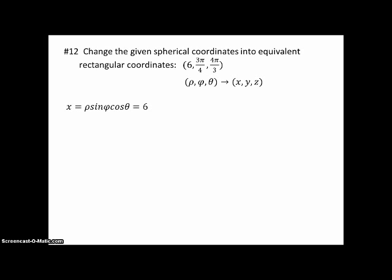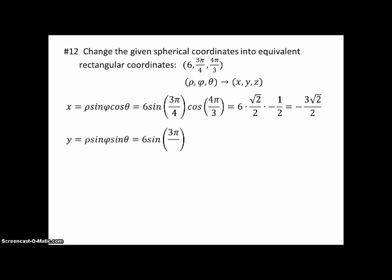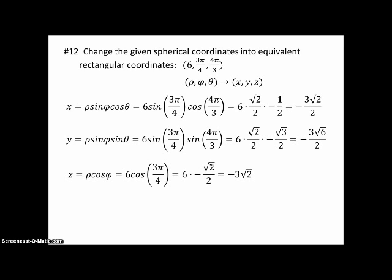Number 12. Change the given spherical coordinates into equivalent rectangular coordinates. 6, 3 pi over 4 and 4 pi over 3. So what we've been given is rho phi theta. We want to change to x y and z. So we take out the formulas for spherical coordinates and plug into the formula for x. So we have 6 times a sine of 3 pi over 4 times a cosine of 4 pi over 3 and so on. And then y is rho times sine of phi times sine of theta. Just plug and chug. And then finally z is a little bit easier. It's just rho times cosine of phi. And so our ordered triple x y z is as shown. Plug and chug.